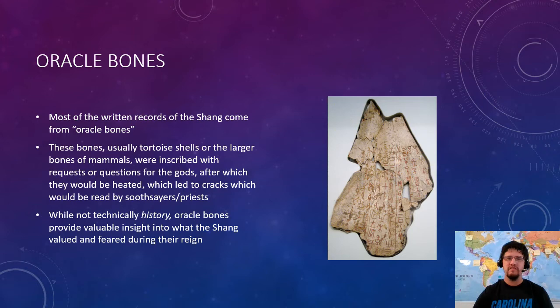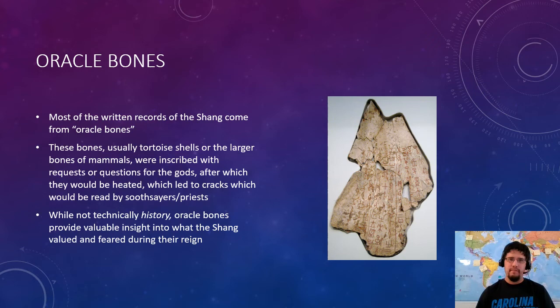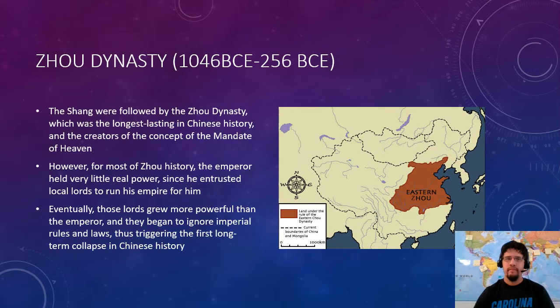The Shang did these things called oracle bones — you can see those right here. The bones are usually tortoise shells or larger hip bones of mammals. They are inscribed with questions and then burned to crack them; the direction the crack went was what the gods were saying. They're not history, but they give us a good idea of what the Shang were worried about: Will it rain? Will my child be a daughter or a son? Will he or she be evil? Those are all actual things found on oracle bones.